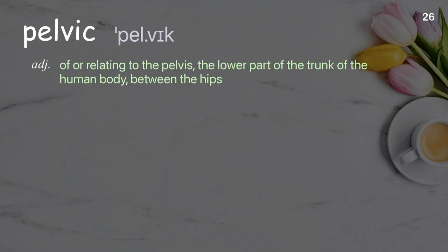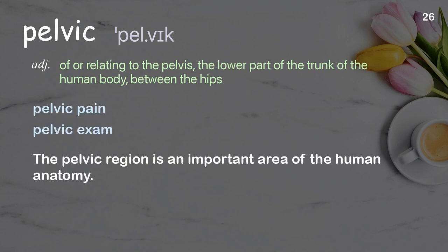Pelvic: Of or relating to the pelvis, the lower part of the trunk of the human body, between the hips. Examples: Pelvic pain. Pelvic exam. The pelvic region is an important area of the human anatomy.